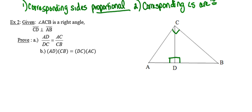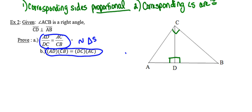Secondly, they want us to prove that the product of AD and CB is equal to the product of DC and AC. As soon as you see a proportion in the proof, you want to think to yourself to use similar triangles. Likewise, anytime you see two products being equal in a proof, you want to think to yourself: use similar triangles.